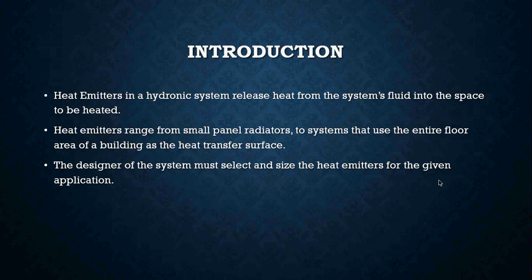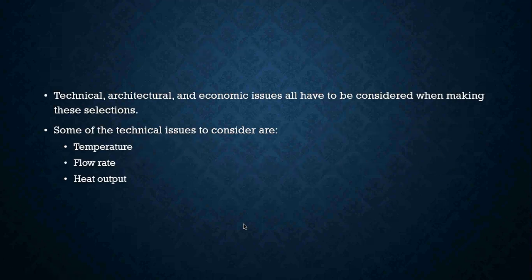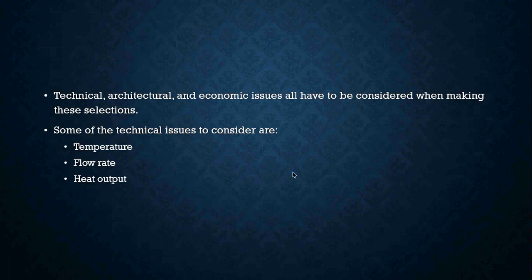The design of the system must select and size the heat emitters for the given application. We have to understand the technical aspects of them, but we should also think about architectural aspects. Some people are very picky when it comes to the way their home looks and the overall design, and obviously there are economic issues to consider as well. These are all very important when deciding what type of heat emitter or baseboard we're going to put in.